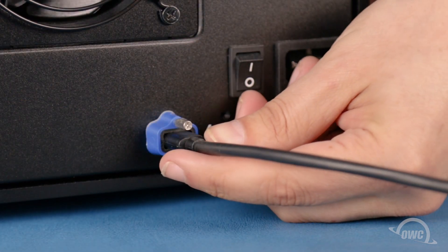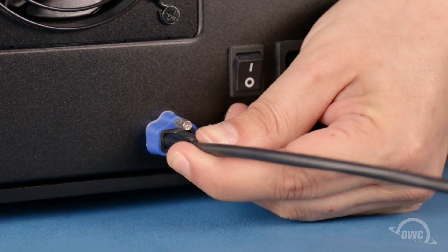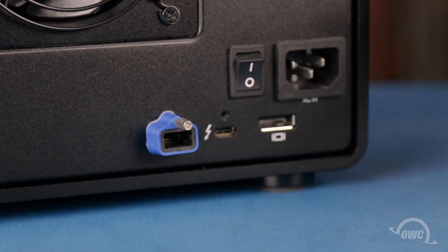If you used the thumb screw, it'll help keep the Klingon in place, making it easier to remove the cable without removing the Klingon itself.